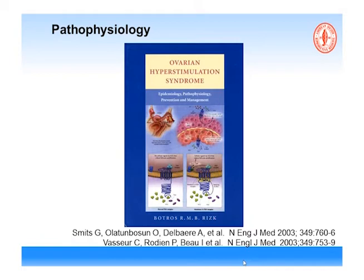The most common hormone that mutant FSH receptors can respond to, outside normal situations, is HCG. HCG is prevalent during pregnancy — it is the hormone of pregnancy. So a pregnant woman has suppressed FSH but has HCG; the HCG stimulates the receptor to produce more follicles. She has never seen a fertility doctor or taken fertility drugs — this is spontaneous, normal pregnancy driving ovarian hyperstimulation.